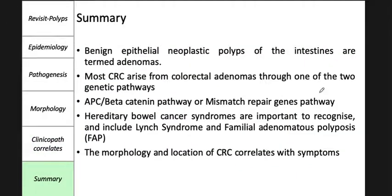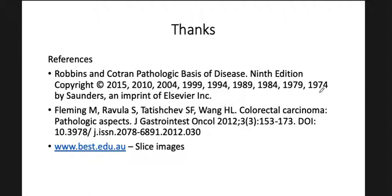In summary: benign epithelial neoplastic polyps of the intestines are termed adenomas. Most CRCs arise from colorectal adenomas through one of two genetic pathways — the APC/beta-catenin pathway or the mismatch repair genes pathway. Hereditary bowel cancer syndromes including Lynch syndrome and familial adenomatous polyposis are important to recognize, though beyond the scope of this lecture. Morphology and location of CRC correlates with symptoms. Thanks so much for your time.